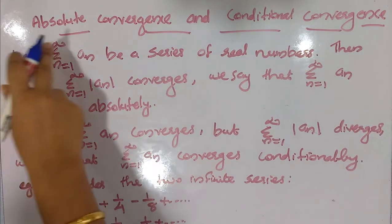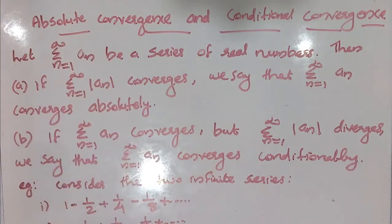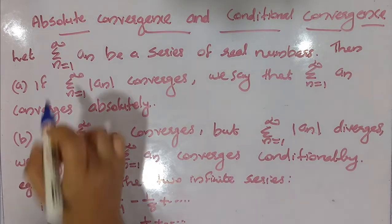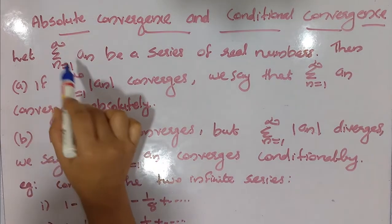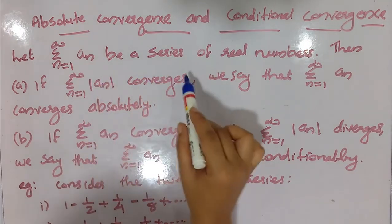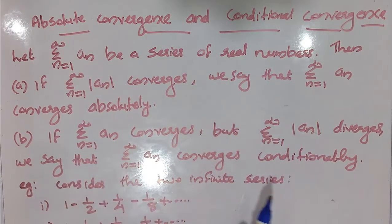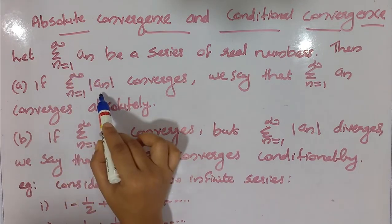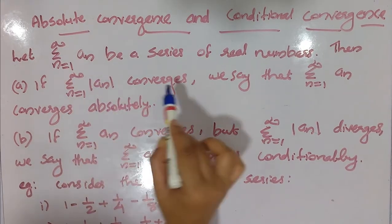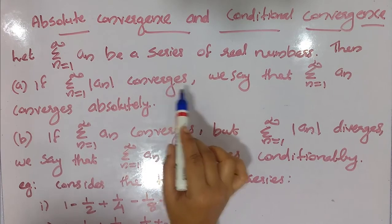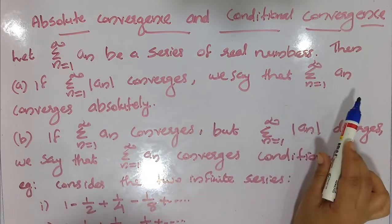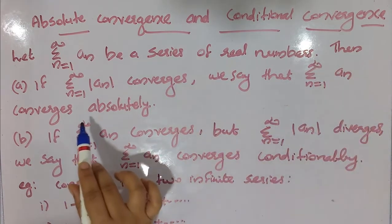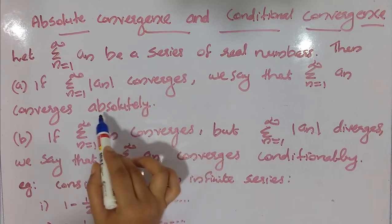Today we will discuss absolute convergence and conditional convergence. Let sigma n equals 1 to infinity of a_n be a series of real numbers. Then if sigma n equals 1 to infinity of mod a_n converges, we say that sigma n equals 1 to infinity of a_n converges absolutely.